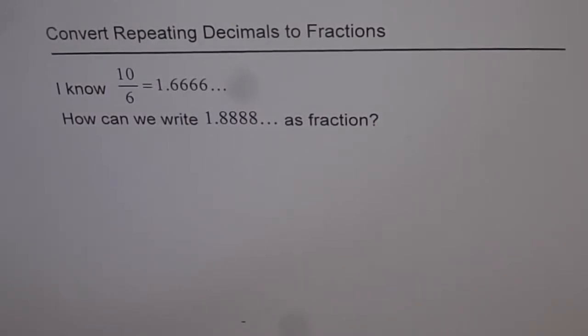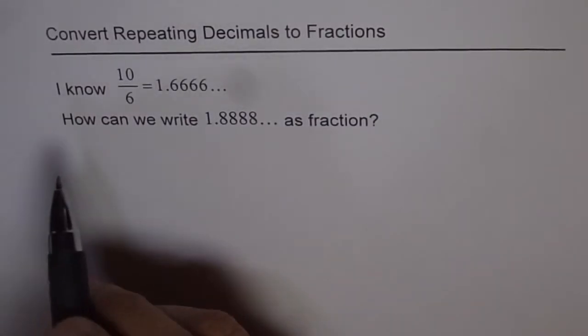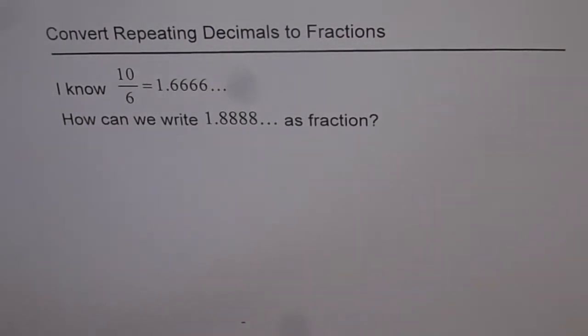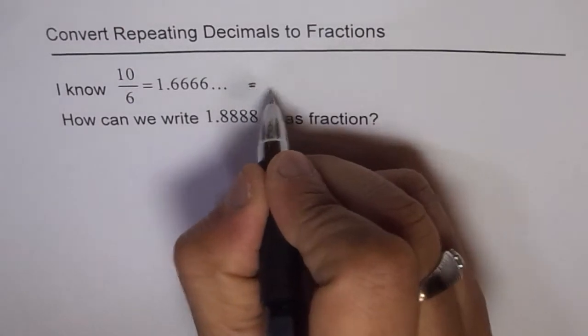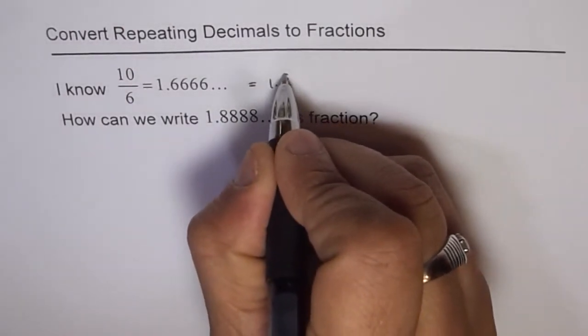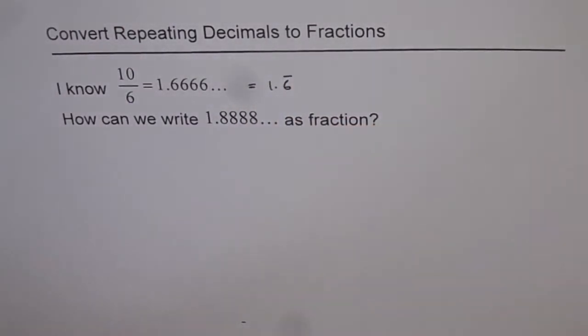Convert repeating decimals to fractions. I know 10 over 6 is 1.6666 repeating. This can also be written as 1.6 recurring, which means the 6 repeats.